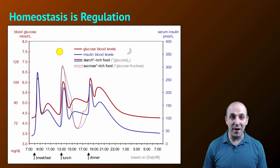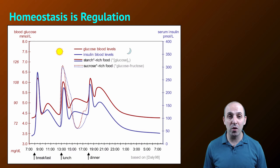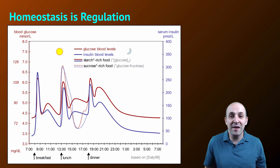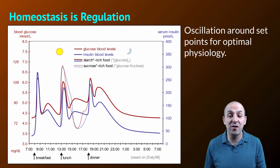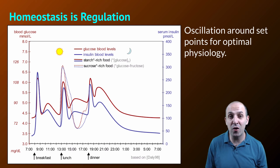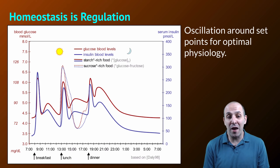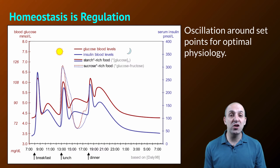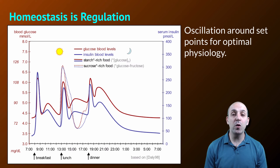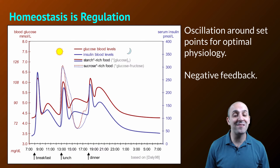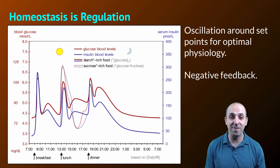Homeostasis is regulation. It's the regulation that takes place inside of an organism on a day-to-day or year-to-year basis. It's the net result of all of the processes that oscillate around whatever the set points are that we need in order to remain optimally functional, physiologically capable, and alive. This graph is showing us changes in our blood glucose levels over the course of a day — sometimes it goes up, sometimes it goes down, but we're always around a similar steady state condition. That is a classic hallmark of negative feedback relationships.